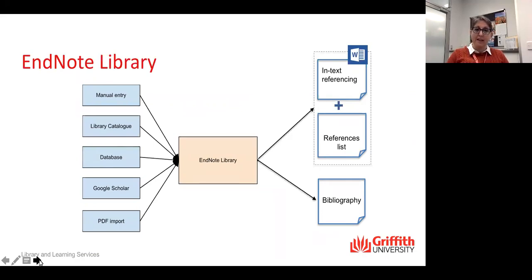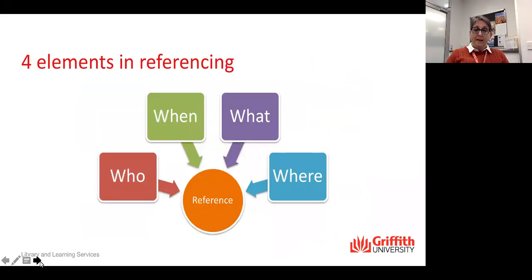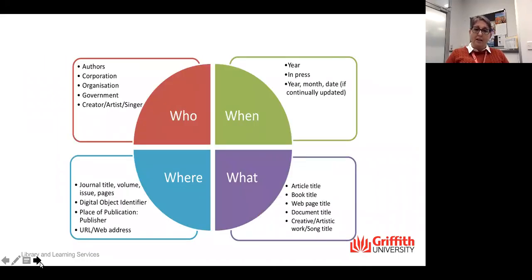It's the different ways that we can get information in and the outputs that we can get. Originally I stopped teaching about referencing, then I realised that many of our postgraduates are international students and don't necessarily know about the four main elements in referencing: who wrote it, when was it written, what did they write, and where was it published. So I created a couple of extra slides which give people an idea of who belongs where when putting information into EndNote.